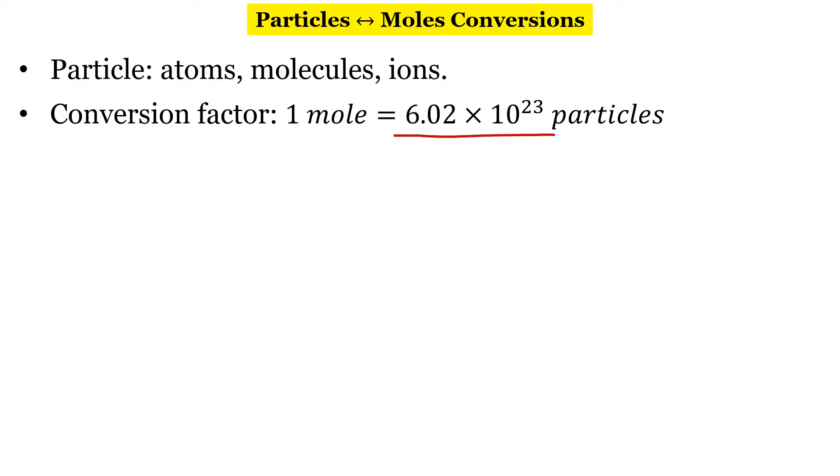Remember, a mole contains 6.02 times 10 to the 23rd of whatever you're talking about. So we're talking about particles. In chemistry, the two that you're going to probably see most often are atoms and molecules, but you could also see ions. So let's look at some examples.